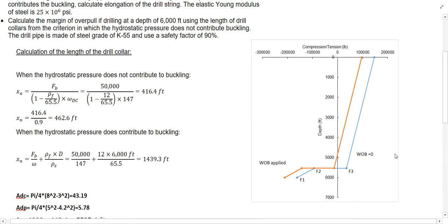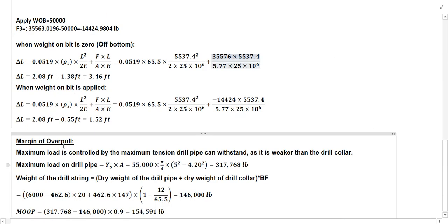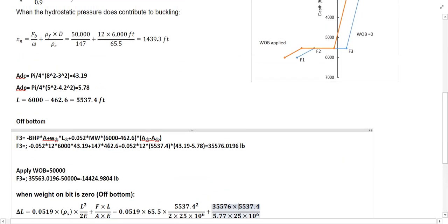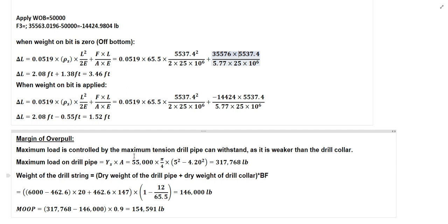The third part is asking us to find the margin of overpull for the steel grade K55. We have to find the maximum load on the drill pipe, which is the yield strength of 55,000 (because it's K55) multiplied by the area of the drill pipe. That gives the maximum load on the drill pipe. We also need to find the weight of the drill string, which equals the dry weight of the drill pipe plus the dry weight of the drill collar multiplied by the buoyancy factor.